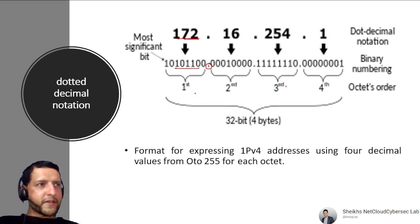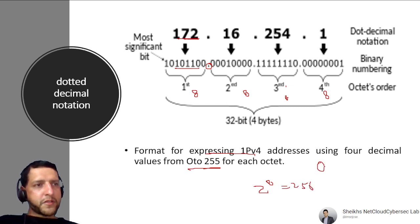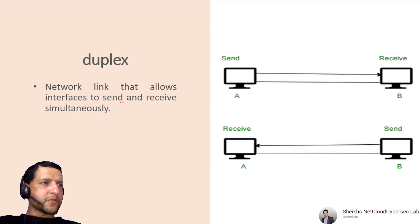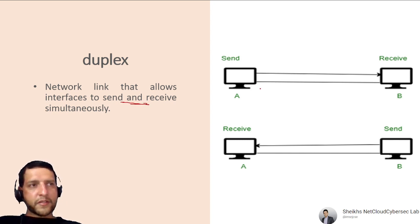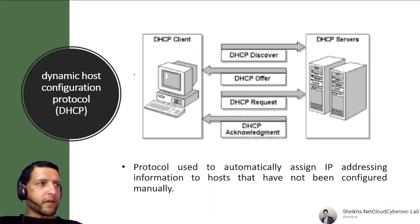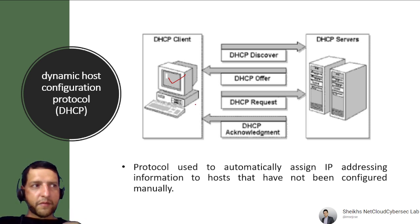Dotted Decimal Notation is the format for expressing IPv4 addresses using four decimal values from 0 to 255 for each octet. IPv4 is 32 bits (4 octets × 8 bits). Each octet ranges 0–255 because 2^8 = 256 starting from 0. Duplex is a network link that allows an interface to send and receive data simultaneously — like talking on the phone where both parties can speak and listen at the same time.